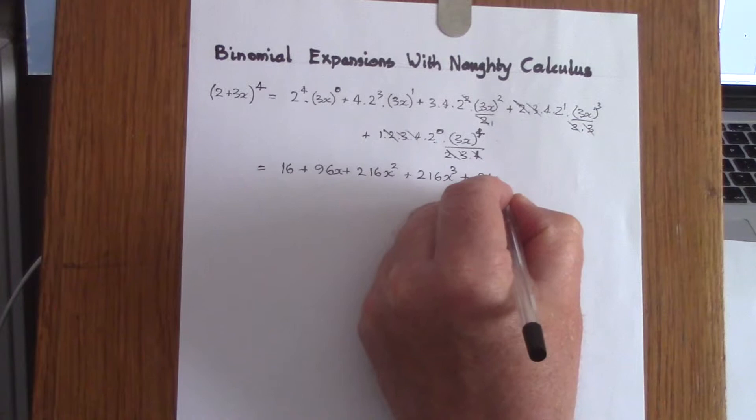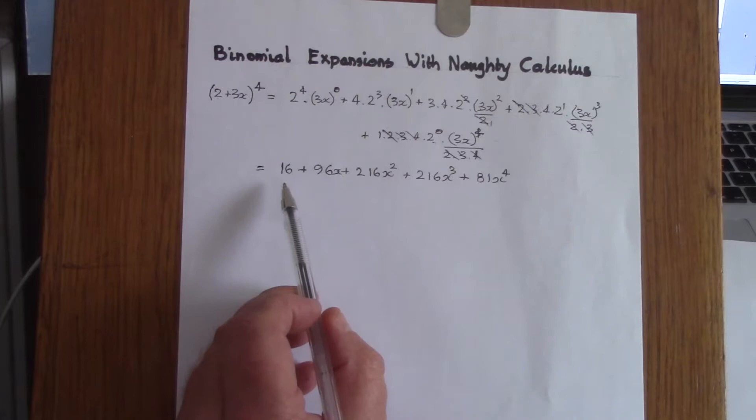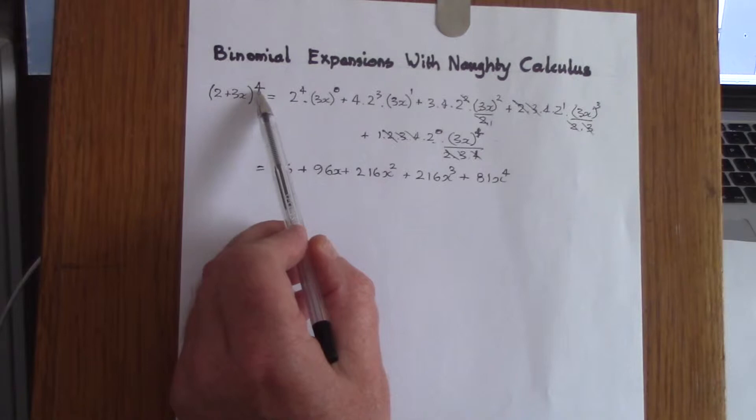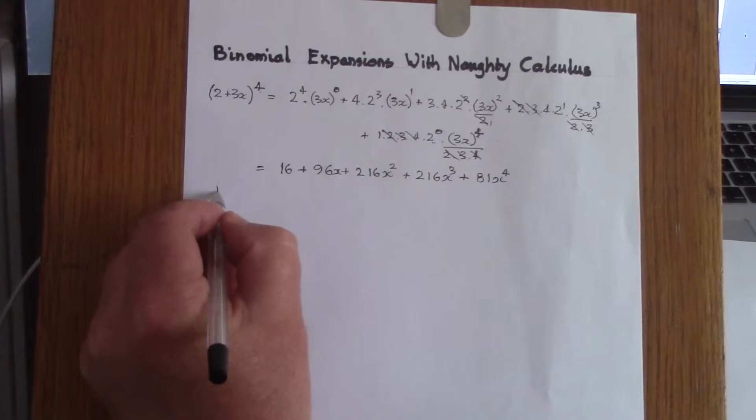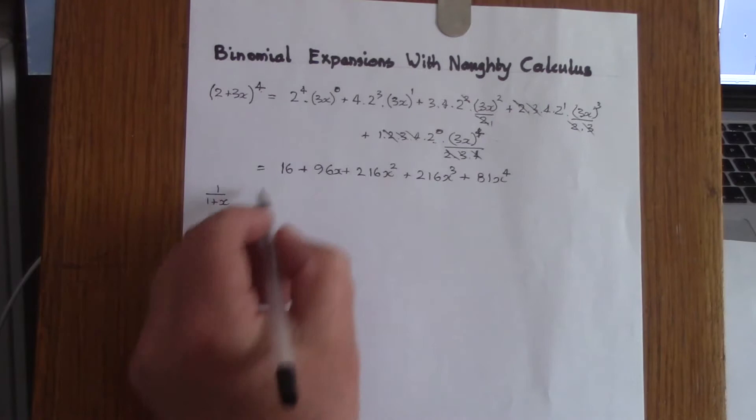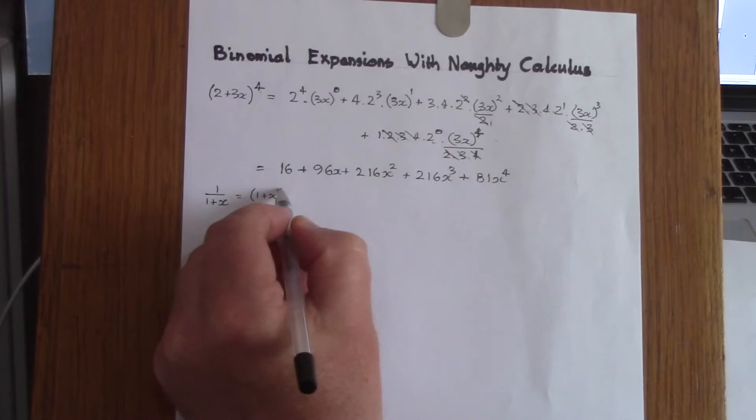Although this method may not be the most advantageous when the power is a positive integer, it really comes into its own when dealing with negative and fractional powers, as will be seen. For the next example, let's look at finding the binomial expansion for 1 over (1 + x), which we can write as (1 + x) to the power of minus 1.